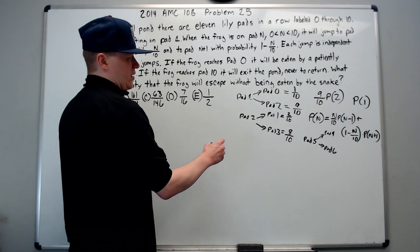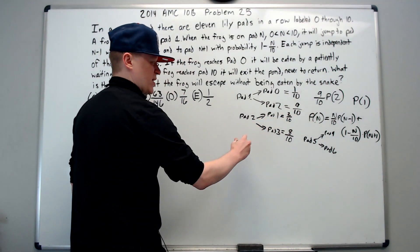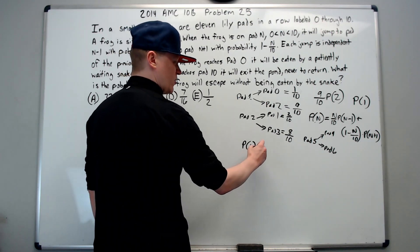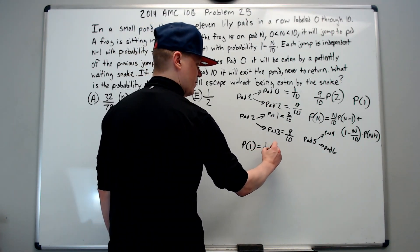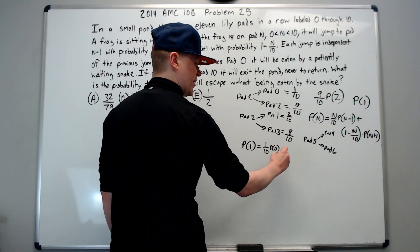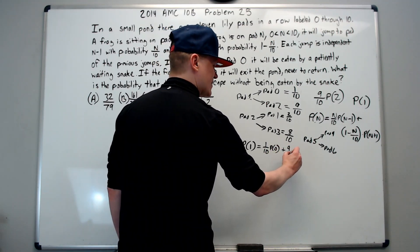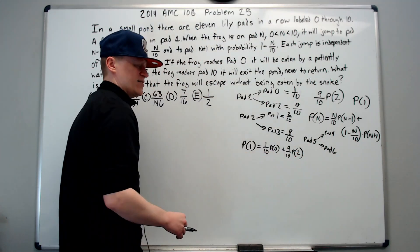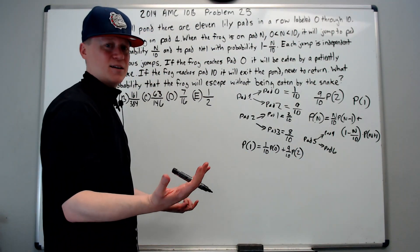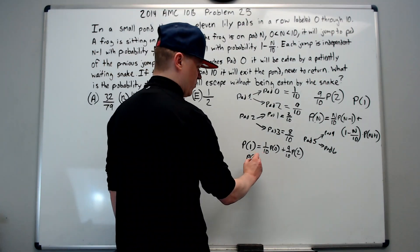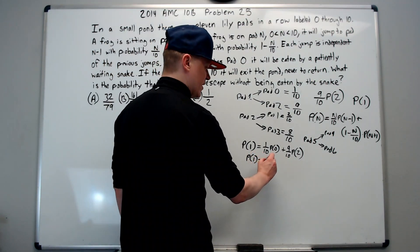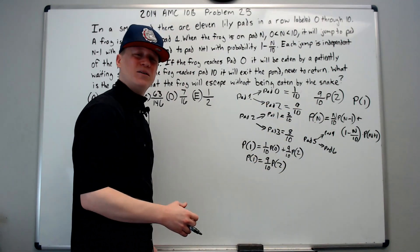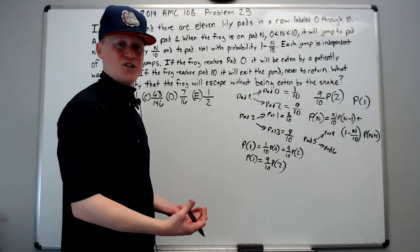Using this formula, let's express the probability of surviving from pad 1. It's going to equal 1 tenth times P of 0 plus 9 tenths times P of 2. The chance he survives from pad 0 is 0 — there's no chance. So P of 1 equals 9 tenths times P of 2. This confirms what we talked about earlier.